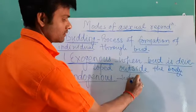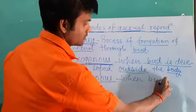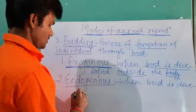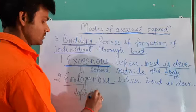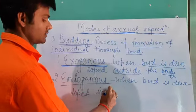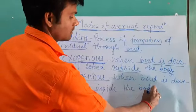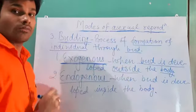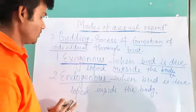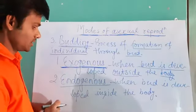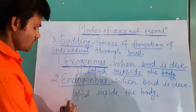When bud is developed inside the body, this is endogenous budding. The best example is a sponge.